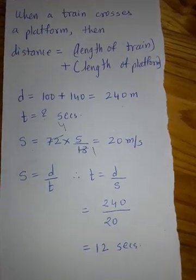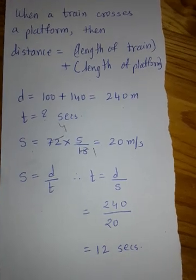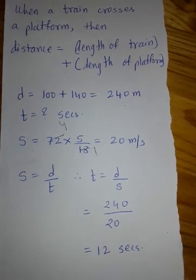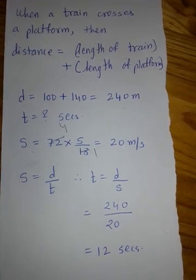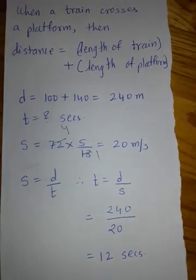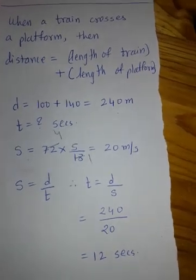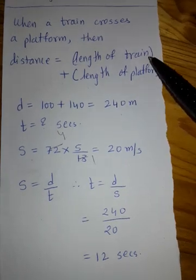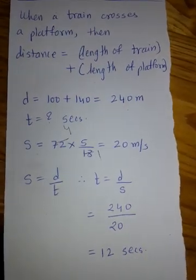So what we learned: when a train crosses a pole, a tree, or a standing man, the distance covered by the train is equal to its own length — the length of the train. But when a train crosses a platform, the distance covered by the train is equal to the length of the train plus the length of the platform.